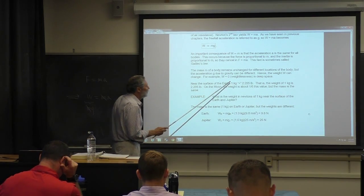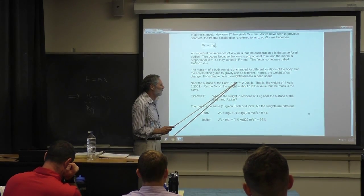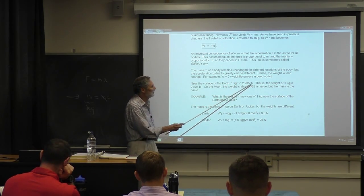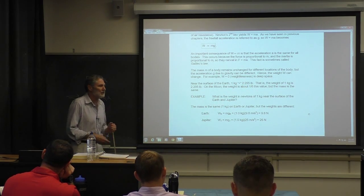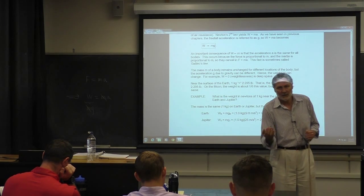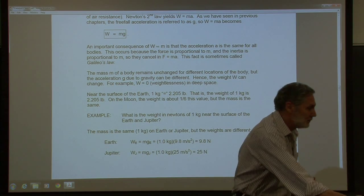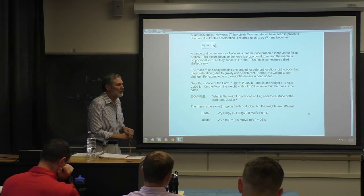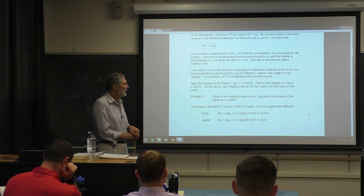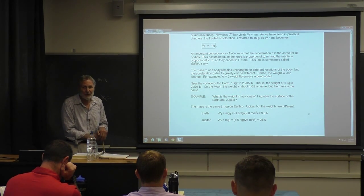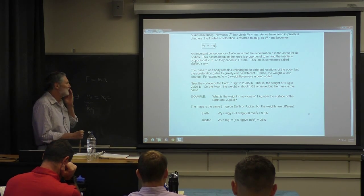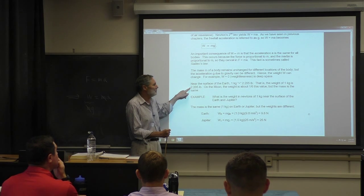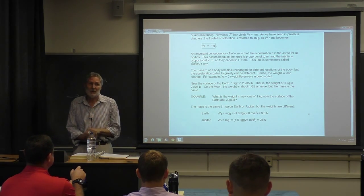Near the surface of the Earth, one kilogram equals 2.205 pounds — but I put quotes around that because these are not the same units. Kilograms is a unit of mass; pounds is a unit of force. The proper statement is one kilogram weighs 2.205 pounds on the surface of the Earth. If you go to the Moon, where gravity is about one-sixth, the weight changes, but the mass stays the same. In deep space, the weight is zero.